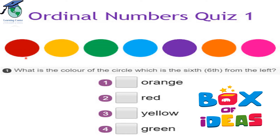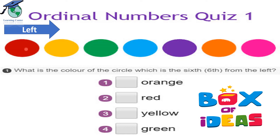This is red color, yellow color, green color, blue color, dark blue color, orange color, and pink color. Now let us read the question: what is the color of the circle which is the sixth from the left? This is the position of left — this arrow means you have to start counting from the left side. So this is the first, second, third, fourth, fifth, sixth. The sixth is the orange — O-R-A-N-G-E. So you are going to put a happy face.